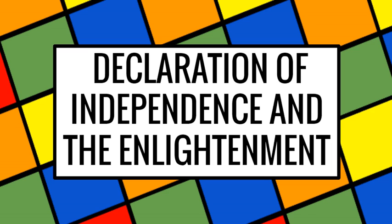The Declaration of Independence used Enlightenment ideas to show Great Britain and the world they were justified in rebelling. It connected different ideas from different thinkers, and applied them to their colonial situation.